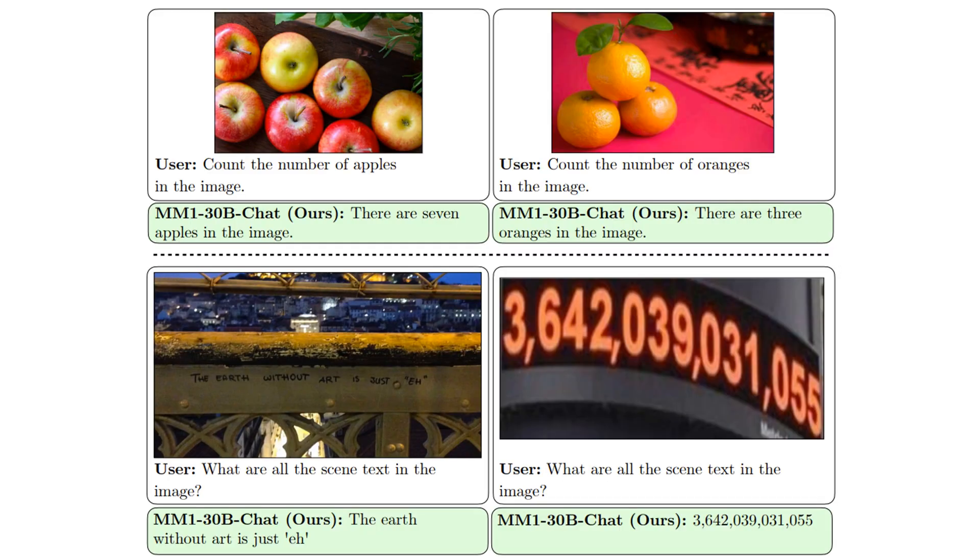In these experiments, user presents an image to MM1 model and asks a question. In the two top images, the user asks about the number of apples and oranges in the image. We see that MM1 can correctly answer these rather easy questions. In the two bottom images, the MM1 model is asked to read text in the image. We can see that it can read the text with 100% accuracy.